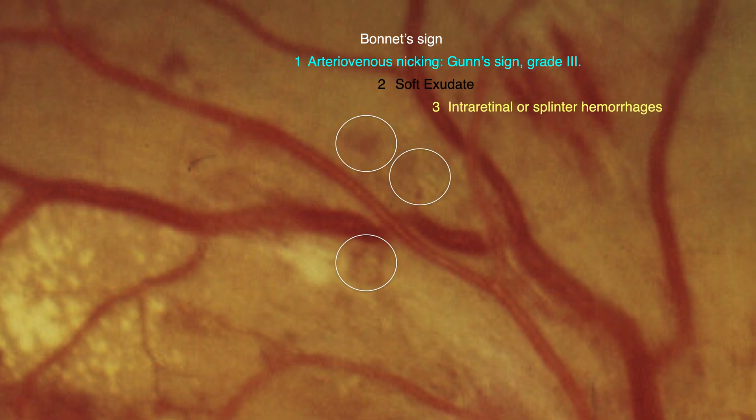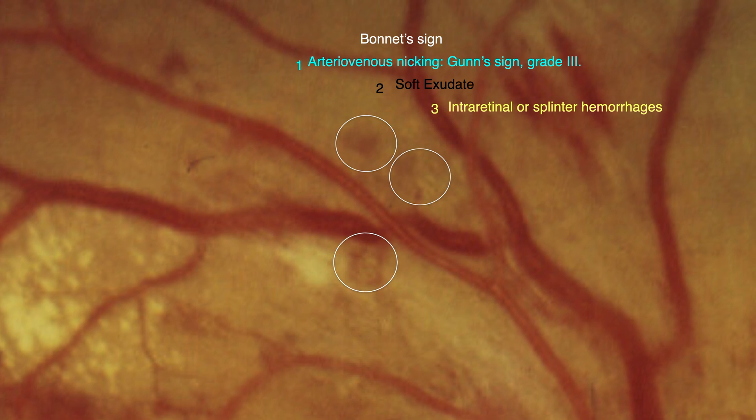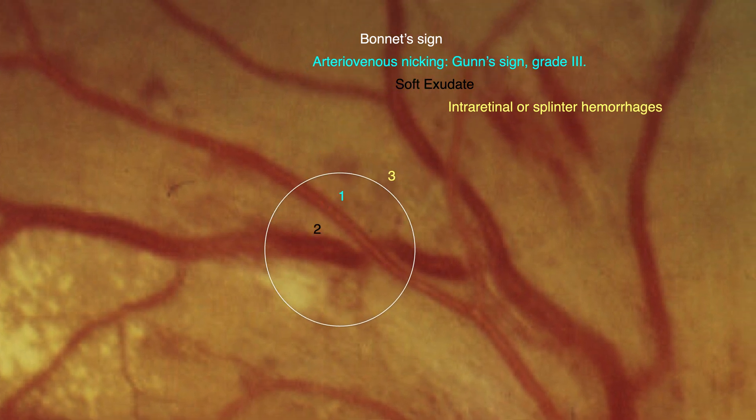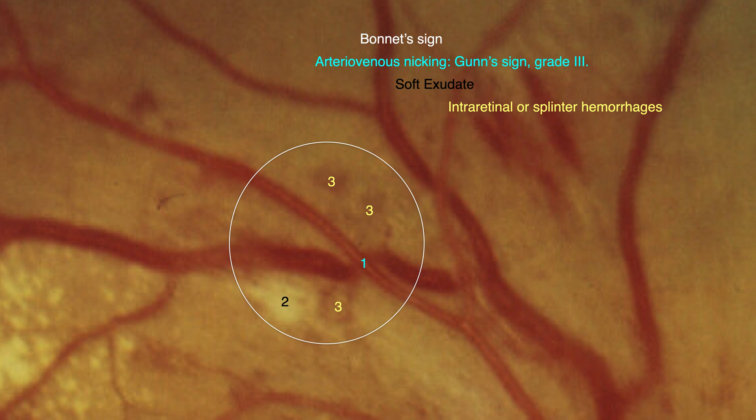And the third component of the triad is the presence of intraretinal or splintered hemorrhages in the vicinity of arteriovenous crossing. This is the characteristic triad of bonnet sign.